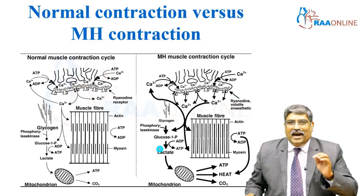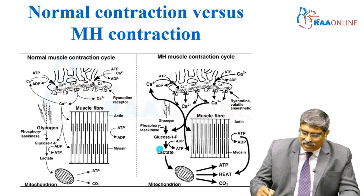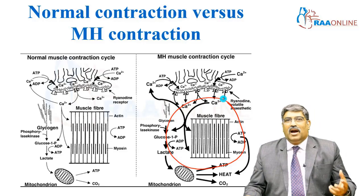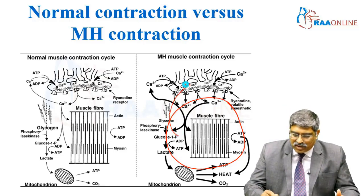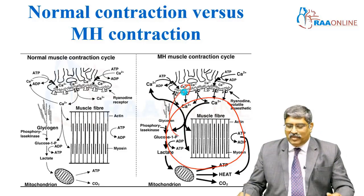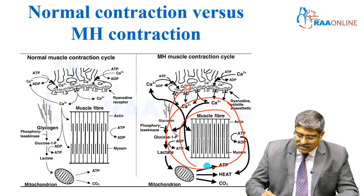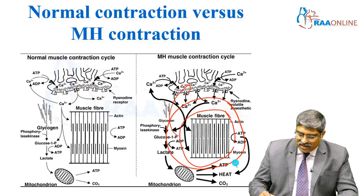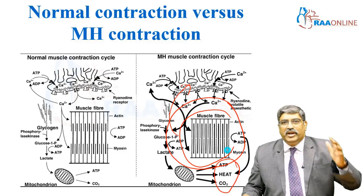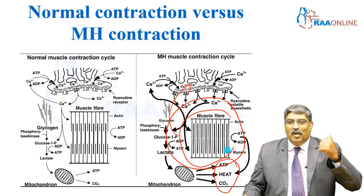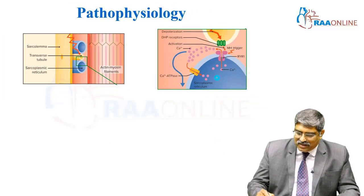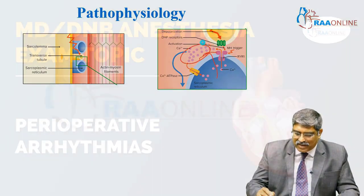What happens in malignant hyperthermia? The calcium remains inside the cytoplasm and does not go back into the sarcoplasmic reticulum. You can see the sustained contraction of the skeletal muscle, thereby generating more heat, more ATP, and more carbon dioxide. Here, the calcium from the sarcoplasmic reticulum has moved into the cytoplasm.